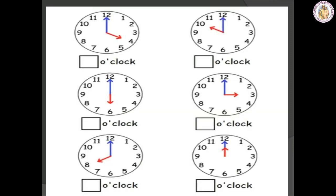We have already seen how to read the time. Let us try some examples. In the first picture, the hour hand is on 4 and the minute hand is on 12, so the time is 4 o'clock. The next time is 10 o'clock. The third picture is 6 o'clock. The fourth picture is 3 o'clock. The next one is 8 o'clock. And the last one is 12 o'clock.